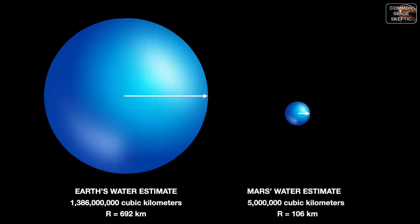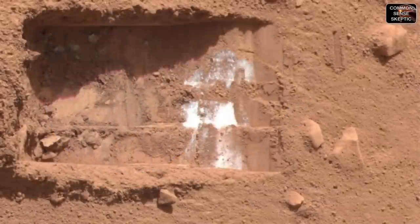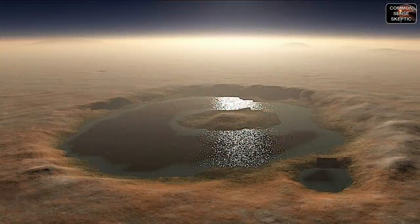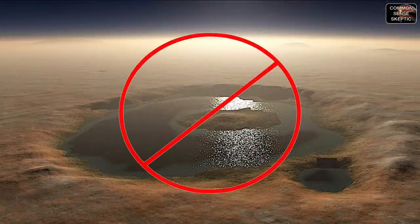On Mars, scientists think there's about 5 million cubic kilometers of water ice on or near the Martian surface. These 3D spheres represent to scale the water estimate of each planet, with the sphere radius marked in kilometers. Maybe there's more water ice to be found, maybe less, but there is no liquid water on Mars — the lack of atmospheric pressure would cause liquid water on the surface to evaporate instantly.